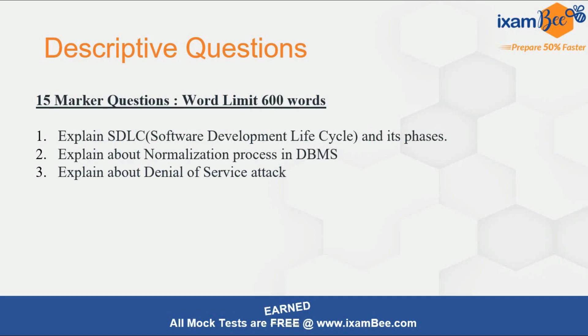Why do this? Because if you try to write one question at 600 words, you can get at most 15 marks and you lose the opportunity to write the next question. Your target should be to write at least half the word limit — so for 600 words, write at least 300 words. Once you've answered a question well in around 300 words, move to the next. When remaining time is available, decide which question you are more confident about and increase its word count.